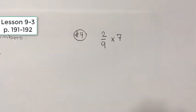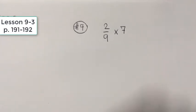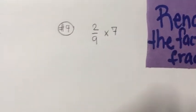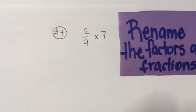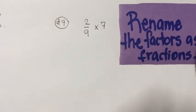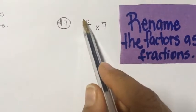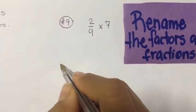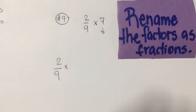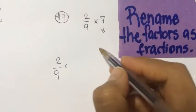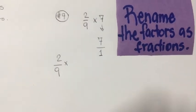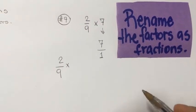Here's another example problem. The first step is to rename the factors as fractions. We already have a fraction here, so we don't need to rename it. But here we have a whole number. To rename a whole number as a fraction, you only put a 1 as the denominator.